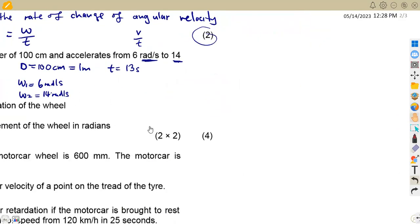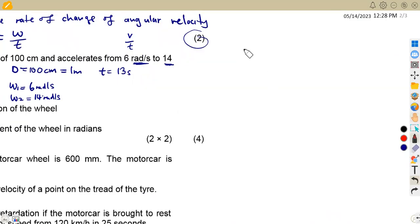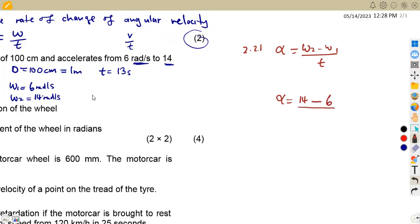We already have the formula from our definition. Angular acceleration alpha equals (omega two minus omega one) over time. Substituting: alpha = (14 − 6) / 13. This gives us approximately 0.615 rad/s². Angular acceleration is measured in rad per square second.